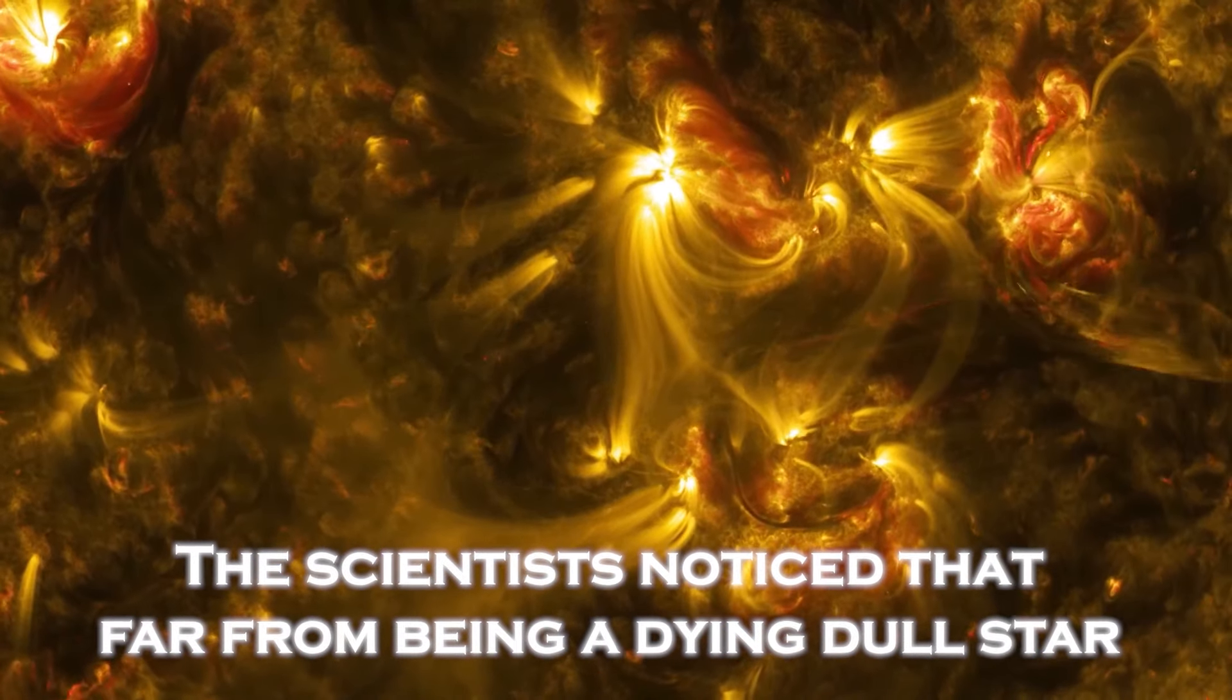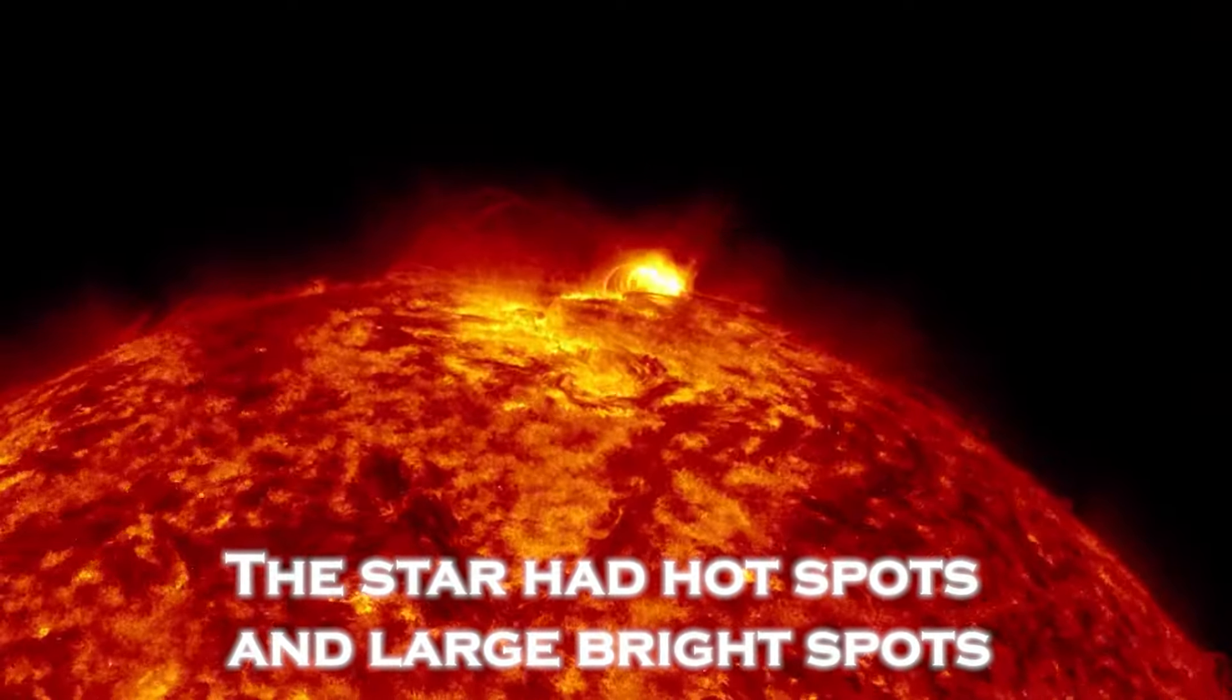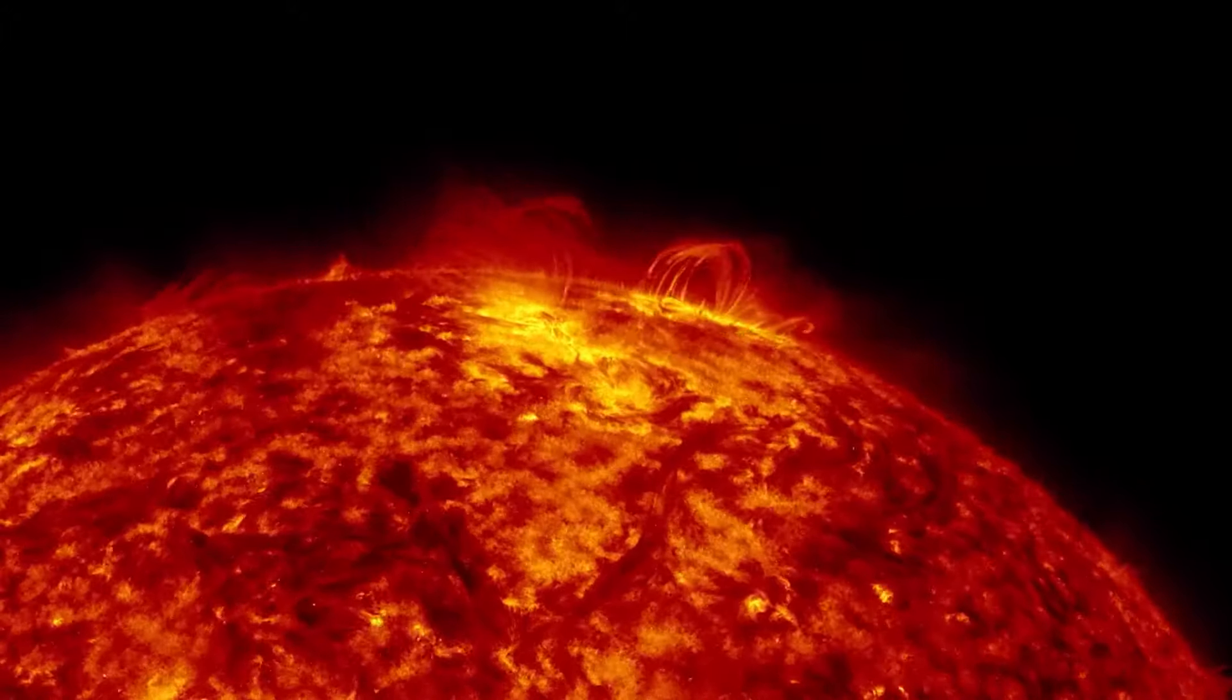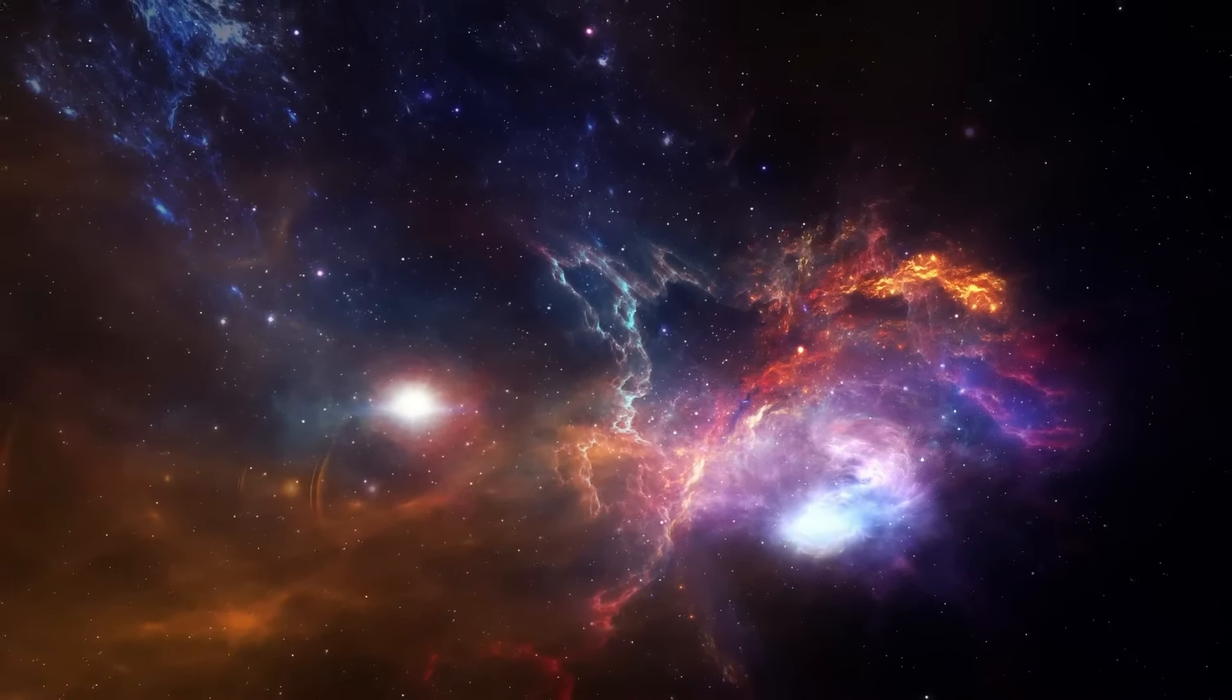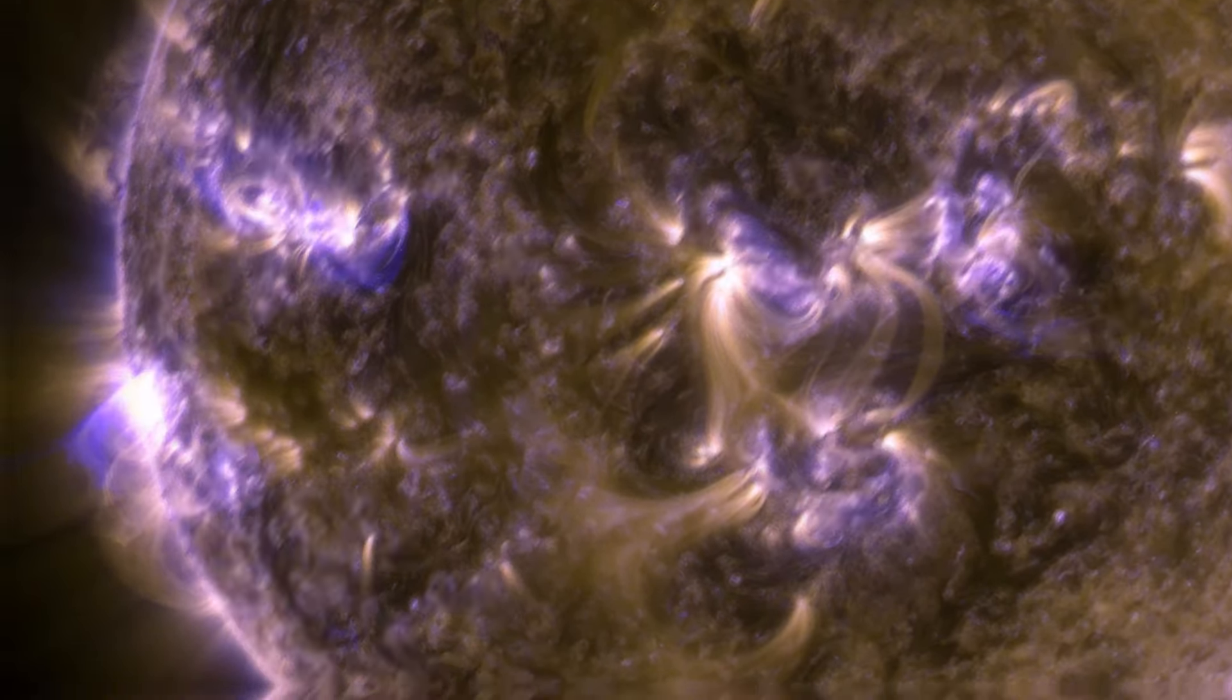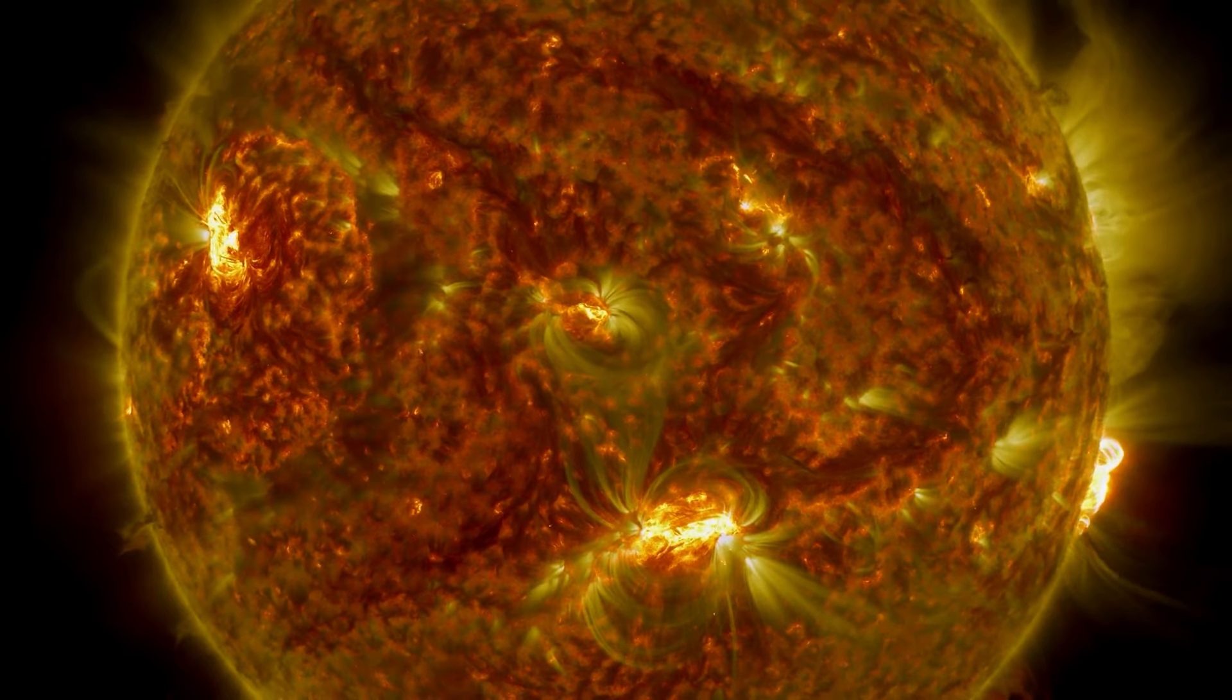The scientists noticed that far from being a dying, dull star, the star had hot spots and large, bright spots, as if it were in full activity. These images showed that Betelgeuse is surrounded by a vast cloud of gas and dust that it expelled itself, and that violent explosions occurred on its surface, giving it a turbulent and changing appearance. This activity could be responsible for the variation in its brightness.